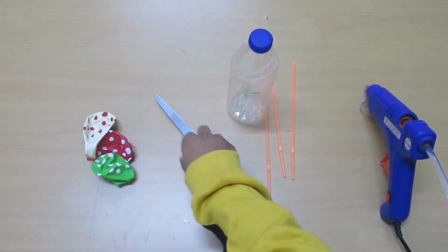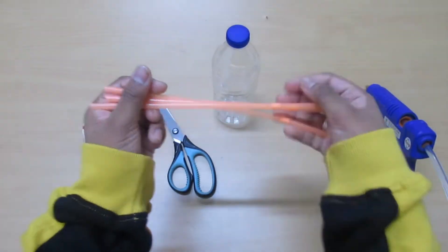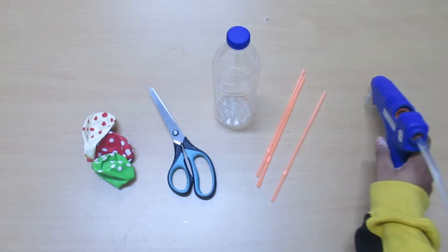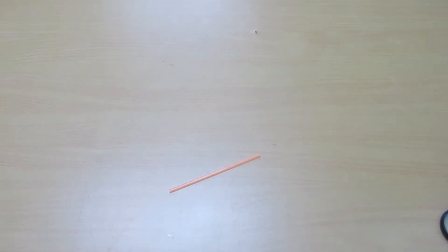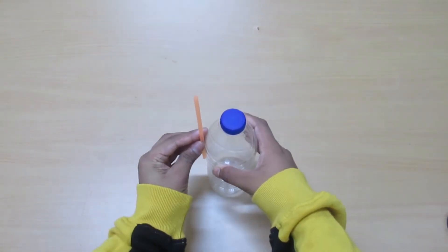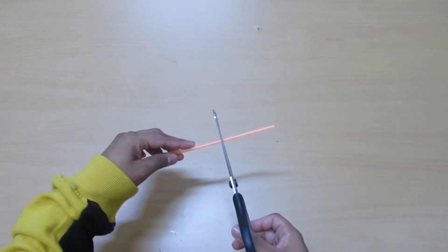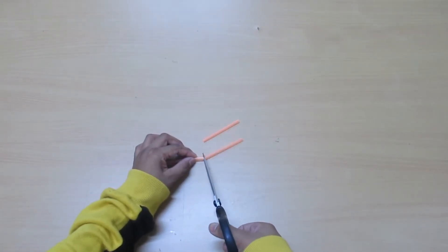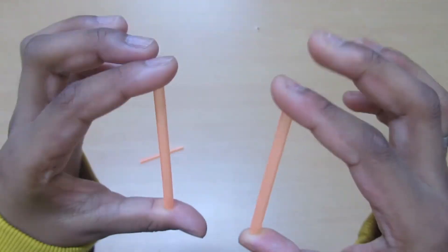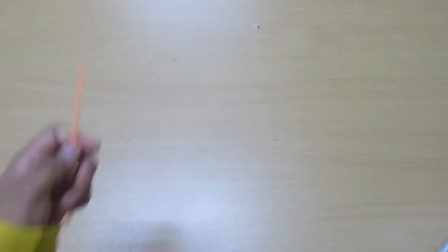First we need balloons, a pair of scissors, an empty bottle, straws, and a glue gun. Take a straw and cut the head part of the straw. Take another straw and cut two pieces in the same size.